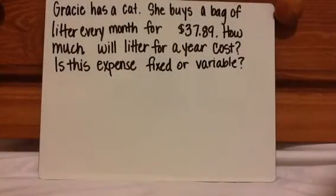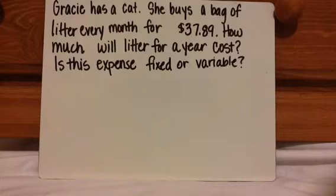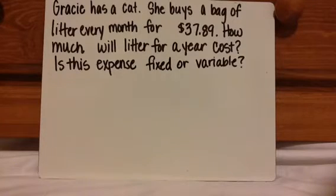Let's look at another example. Gracie has a cat. She buys a bag of cat litter every month for $37.89. How much will litter for a year cost? Is this expense fixed or variable? Press pause, decide if it's fixed or variable, come up with a plan on how to solve it, and then press play.